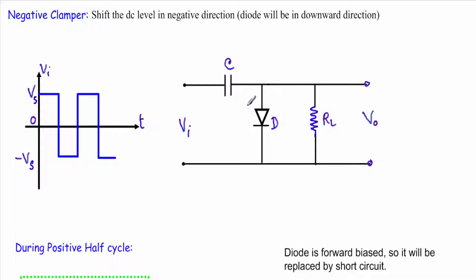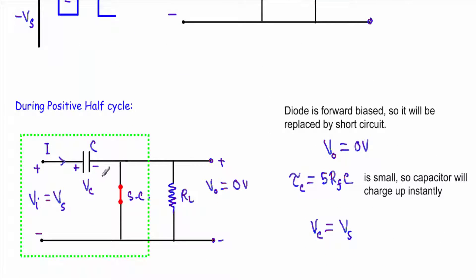Here I am applying a square wave on the input side with positive peak plus Vs and negative peak minus Vs. I have to start my analysis from that half cycle which will drive the diode in forward bias. During the positive cycle, this terminal will be positive and this terminal will be negative, as a result this diode will be in forward bias. When a diode is in forward bias, in case of ideal diode, I can replace that diode with a short circuit. Since I am taking the output across a short circuit, the output voltage will be zero during the positive half cycle.